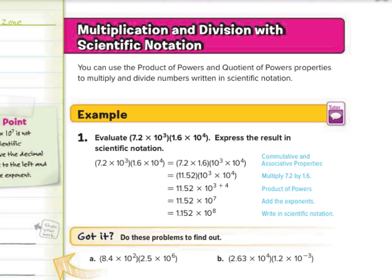What we did is we took 7.2 and 1.6 and regrouped these — 7.2 times 1.6 — then we took times 10 to the third and times 10 to the fourth and regrouped those. These are four numbers being multiplied and we can reorder and regroup them. So 7.2 times 1.6 is 11.52, and then times 10 to the third times 10 to the fourth. Using our product of powers rule, we add three plus four to get 11.52 times 10 to the seventh.